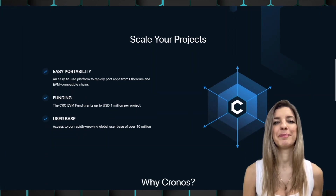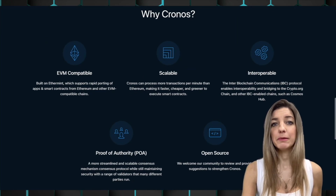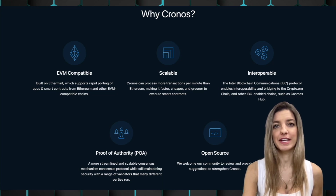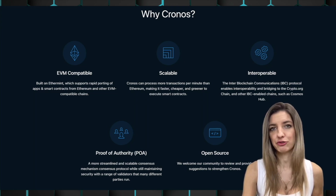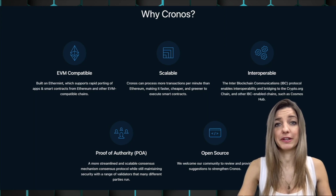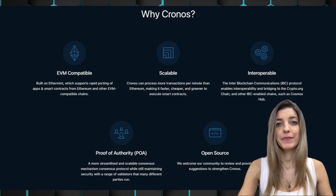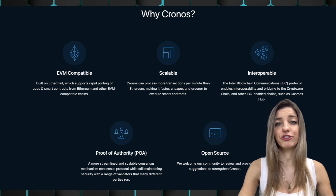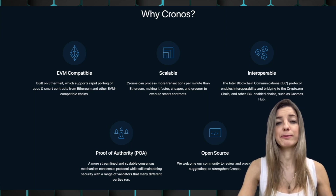The Cosmos SDK is an open-source framework for building multi-asset public proof-of-stake blockchains, as well as permissioned proof-of-authority blockchains — which is what Kronos's consensus mechanism actually is. Proof of authority is a more streamlined and scalable consensus mechanism while still maintaining security with a range of validators that many different parties run. Kronos is fully open source, and thanks to Ethermint, a Cosmos SDK-compatible Ethereum Virtual Machine, Kronos is smart contract compatible.